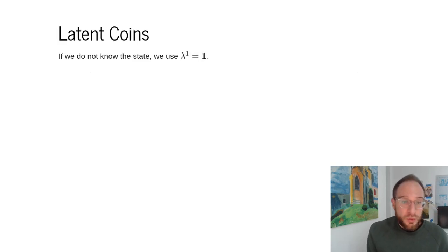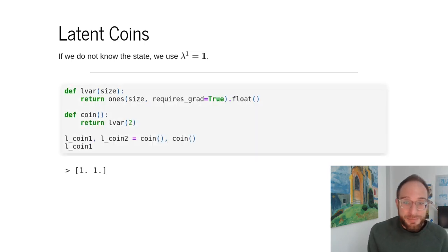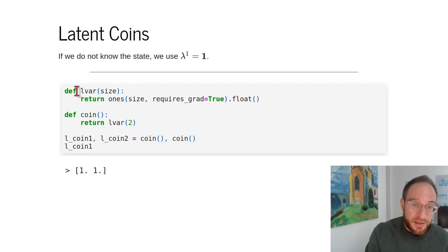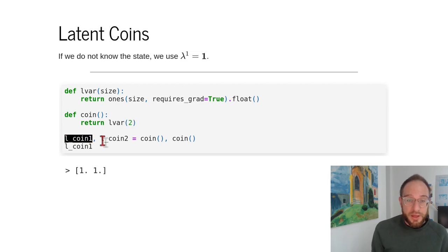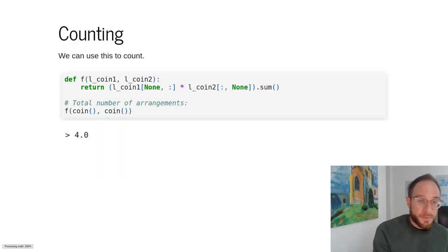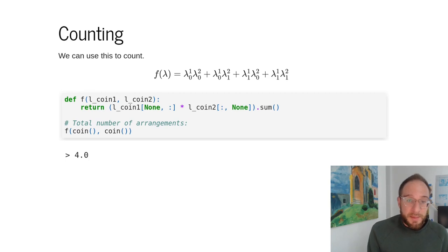We can also have coins whose values we do not know. For these coins we set lambda_1 equal to the ones vector. In PyTorch, this is done by defining a function LVAR that takes in the size of possibilities — for a coin we return LVAR of size 2. In practice, we'll often be creating our lambdas for coin 1 and coin 2 using this zero-argument function.